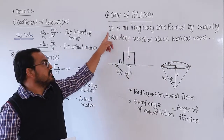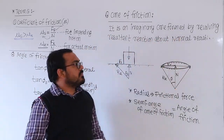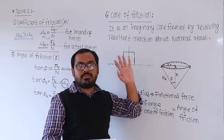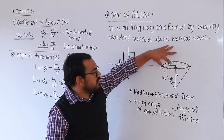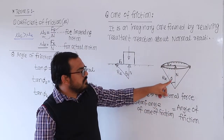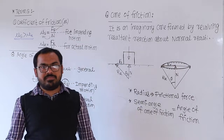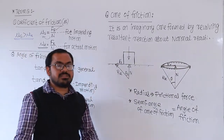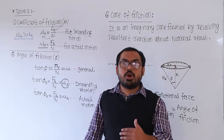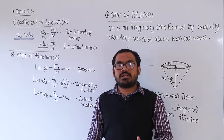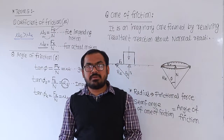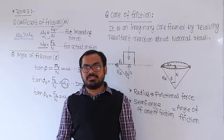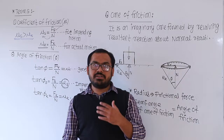The cone of friction is the imaginary cone formed by the resultant reaction when it revolves around the normal reaction. The radius of the cone is the frictional force and the semi-cone angle is the angle of friction. In the next video lecture we will discuss the laws of friction, then belt friction, ladder friction, and related numerical problems and MCQs.